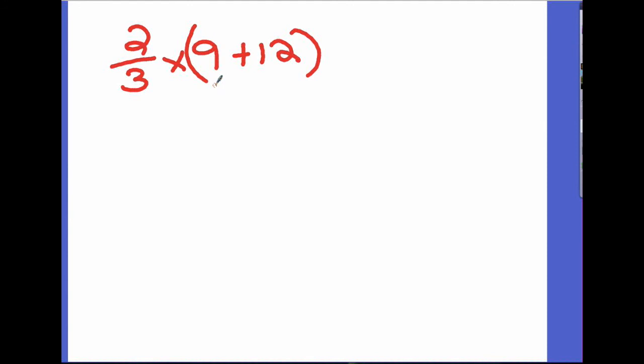Refocus. What do I do first? You add 9 plus 12, and that equals 21. What happens to the rest of my expression? Two-thirds times 21, and then what do I do?